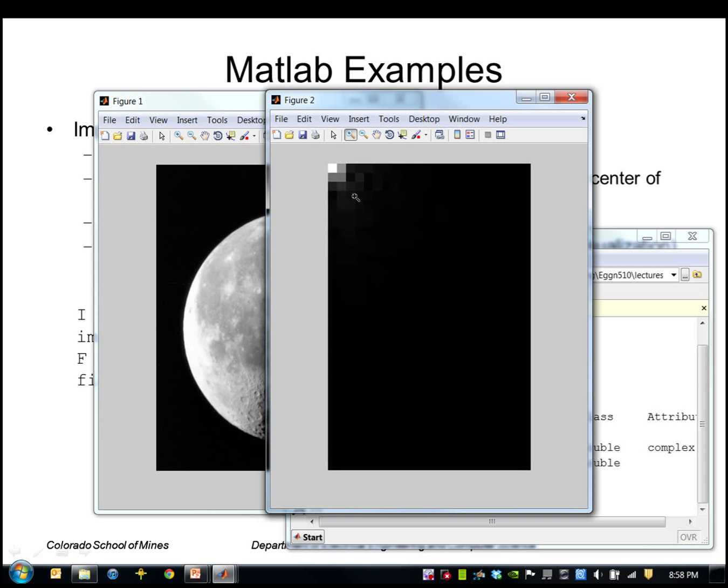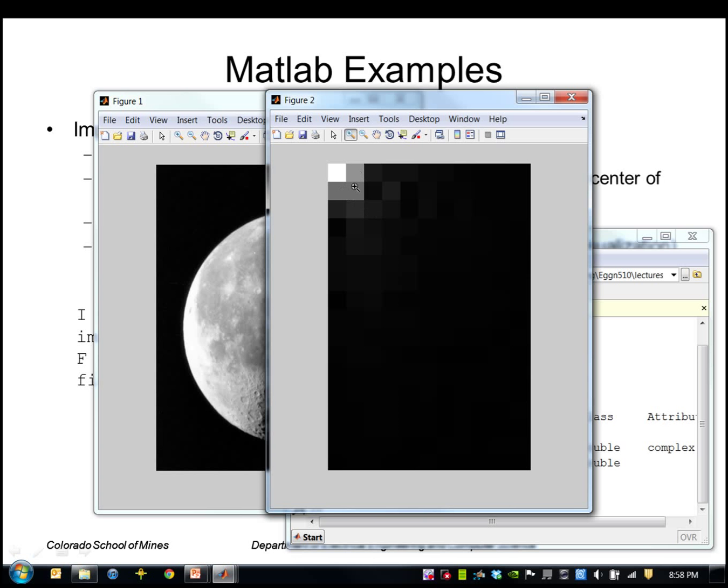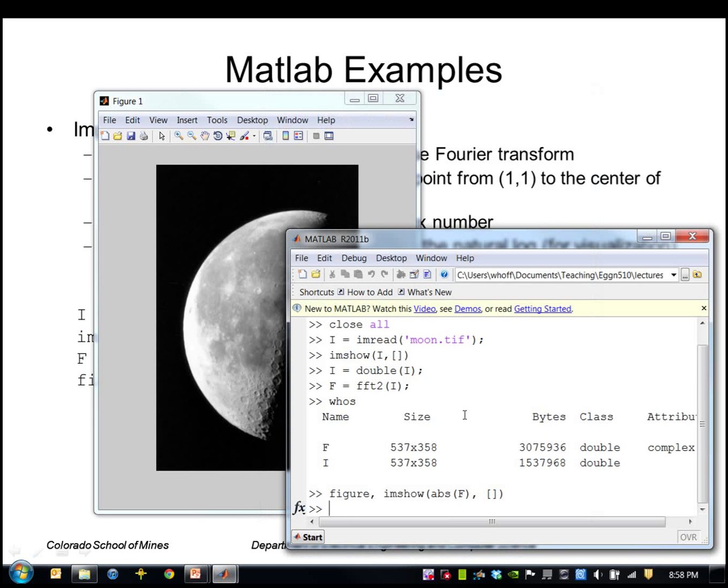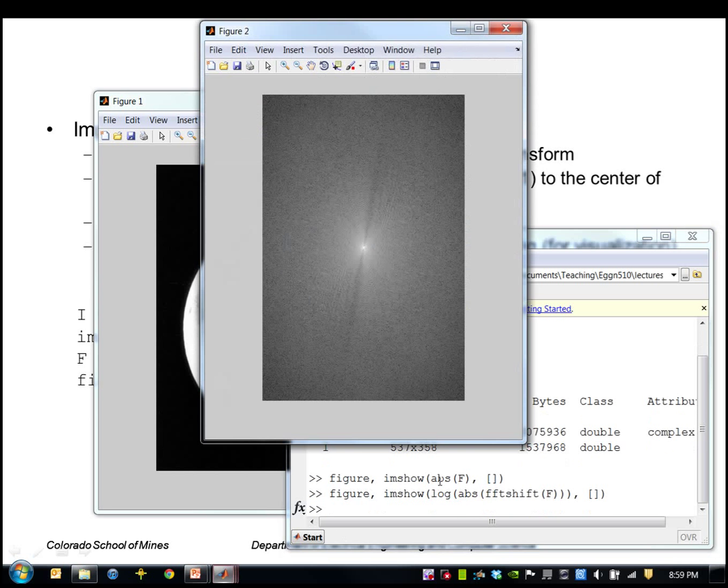If I just zoom in on that, you can see it sitting right there. So two things we want to do: move that to the middle of the image and enhance the low values just for visualization by taking a log function. I'll do this again but first I'll shift it to the middle using FFT shift, which just moves everything to the middle, and then I'll take the absolute value and then the log of that so that enhances the low values.